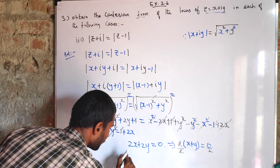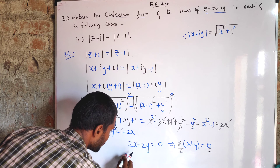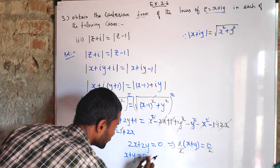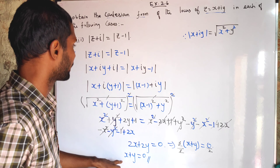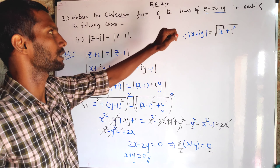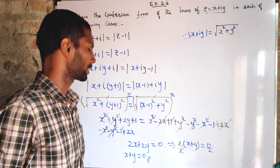Final answer: x plus y equal to 0. This is the required equation of the Cartesian form of the locus of z.